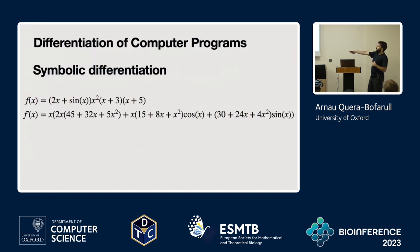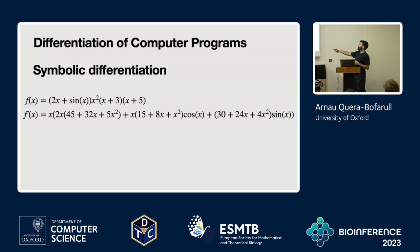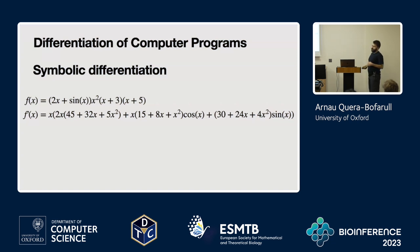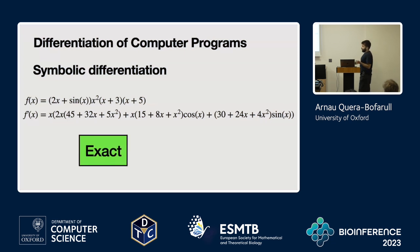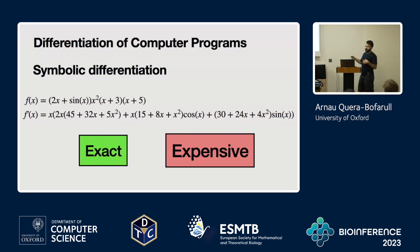Another approach is to hard-code into your programming language a way to differentiate expressions — like humans do, where the derivative of sine is cosine — and then automatically expand the function and its derivative. This is what Mathematica or SymPy does. But even though this is exact, it's terribly expensive: if you have a simulator with a million operations there's no way you can write an expression like that.